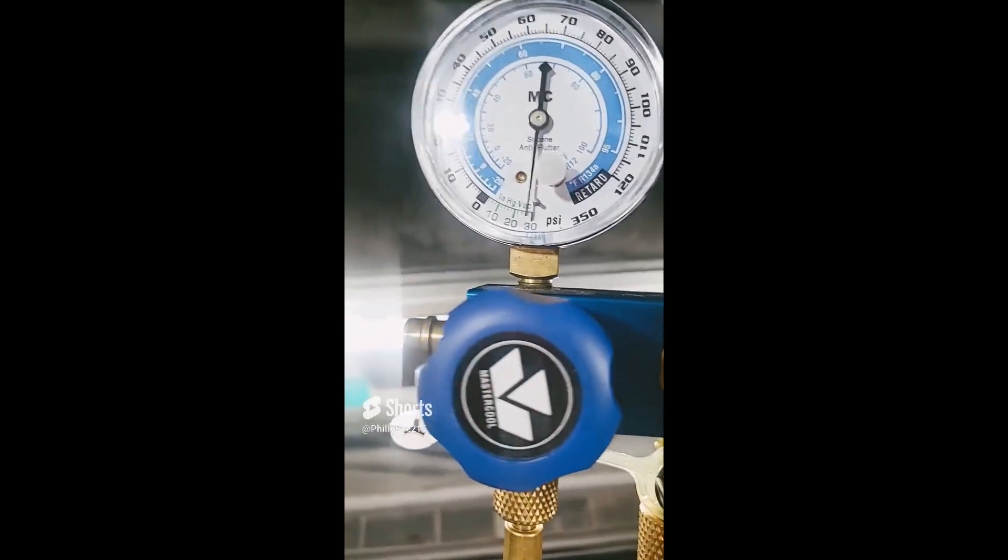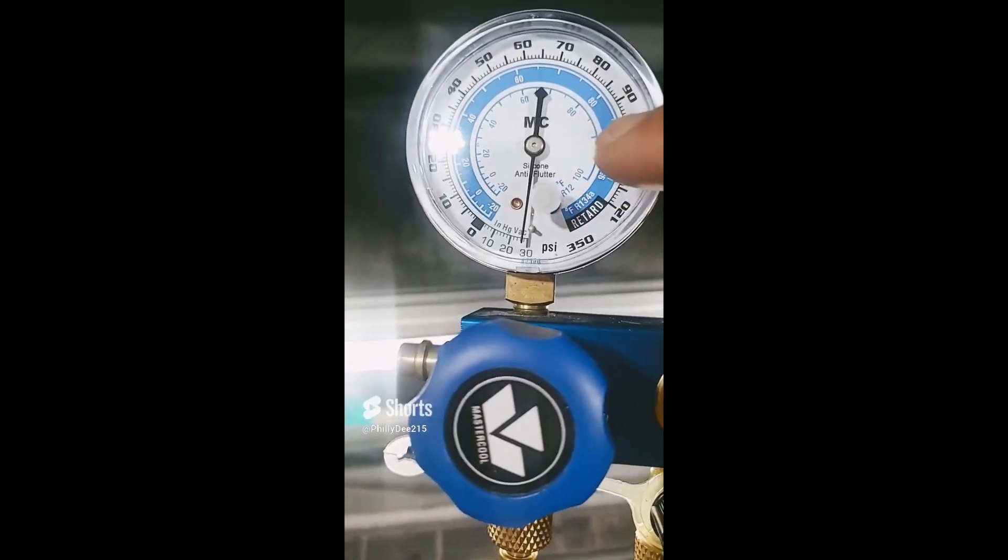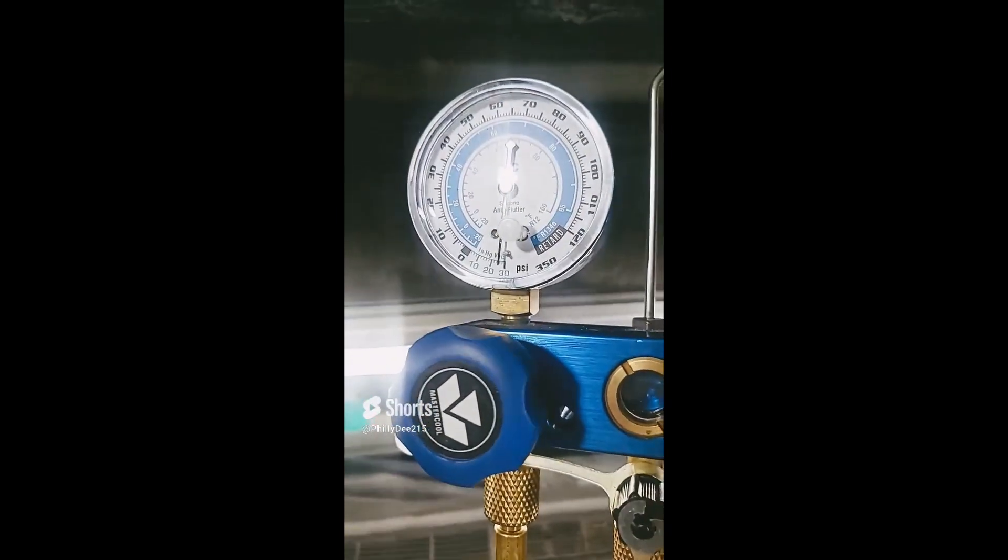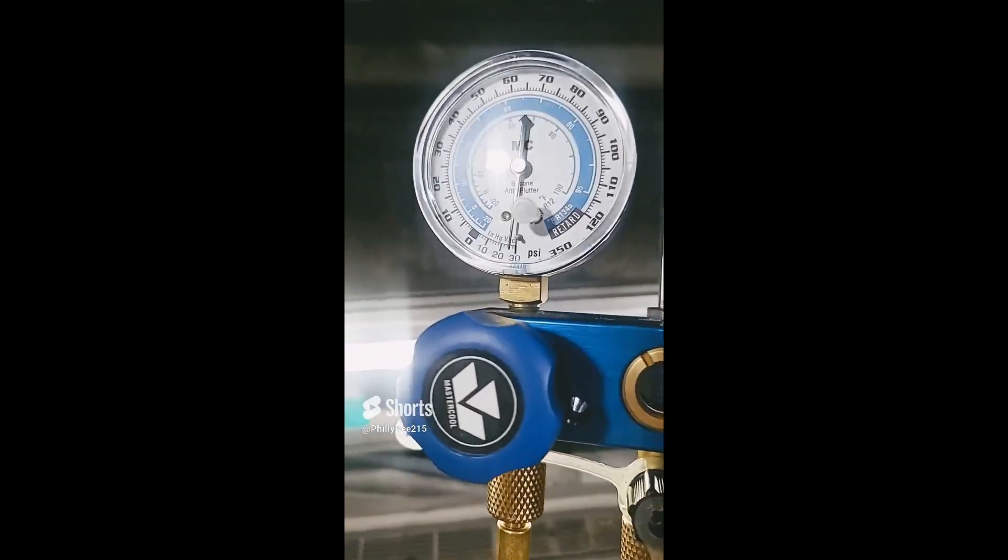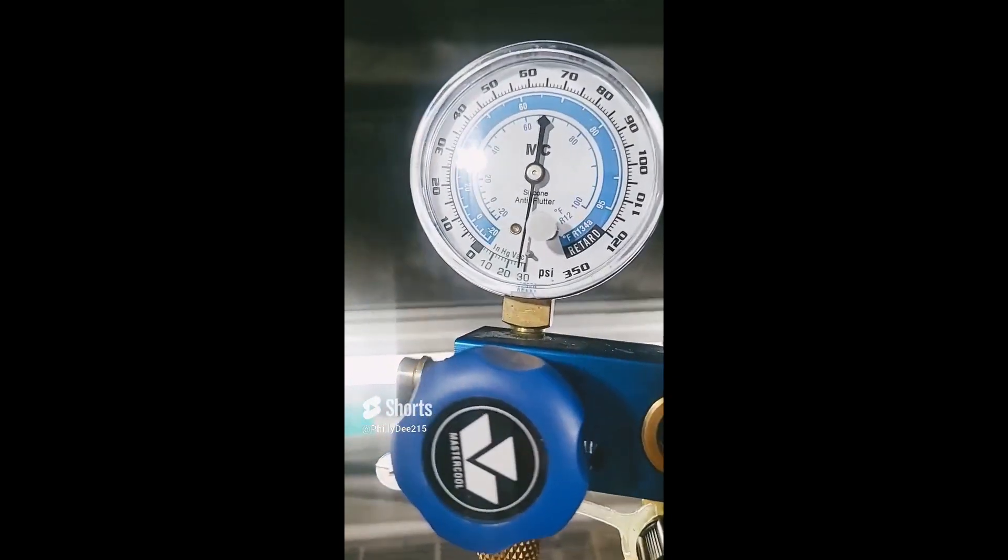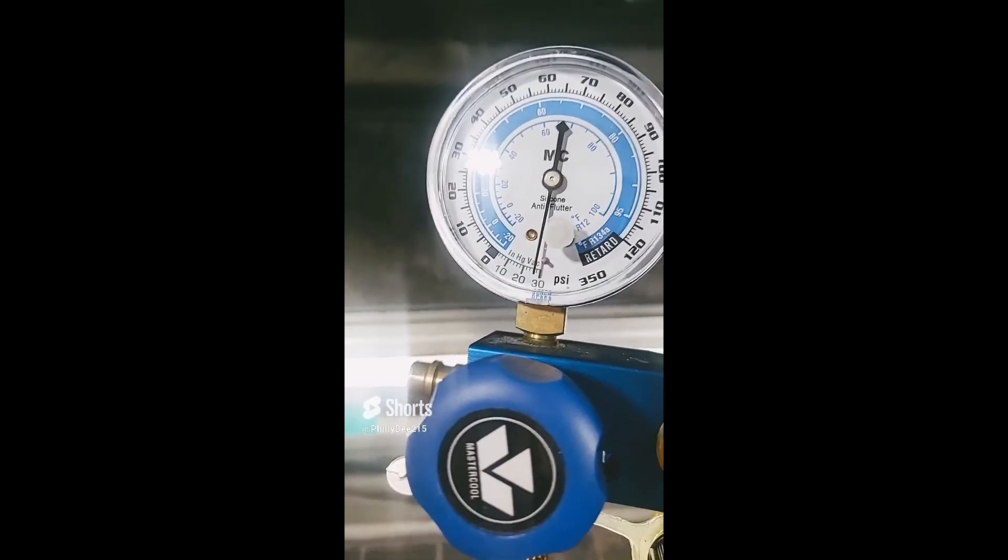So your pump is still good. It's just you can't pull a vacuum because you have a leak. So that's the whole point of using a vacuum pump so you can verify whether your system has a leak or not.